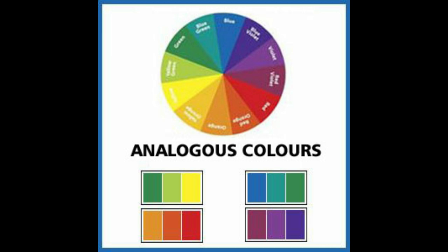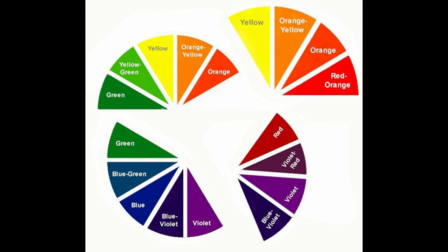I'm going to decorate the remaining buildings with analogous colors or harmonious colors. Harmonious colors are colors that lie directly next to each other on the color wheel. You can pause this part of the video to study which colors are analogous or harmonious colors.